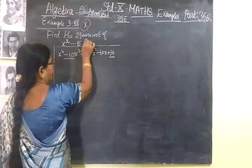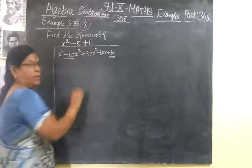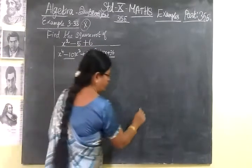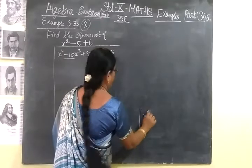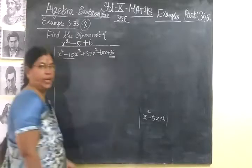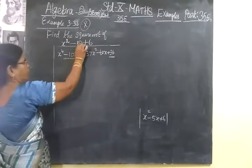Then +6. This is the actual answer. The final answer will be x² - 5x + 6. We need to prove that.